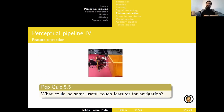Also, remember we talked about those biomimetic rat-inspired whisker sensors in the previous lecture. What would be some useful touch features if you want to use a sensor like that for navigation with a mobile robot?